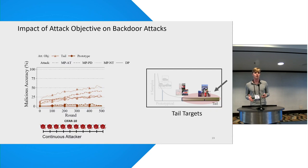What is also interesting is that the performance of the model poisoning attacker on tail targets is quite similar to the data poisoning attacker, and the data poisoning attacker doesn't rely on scaling and follows the training protocol honestly. This seems to suggest that the model is just learning the behavior of the attack as it would learn the behavior for any other tail subpopulation.